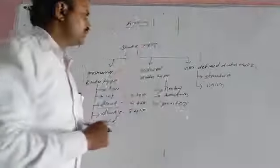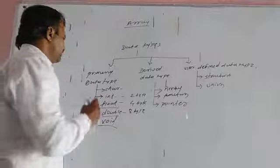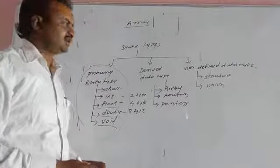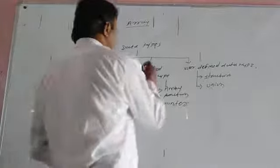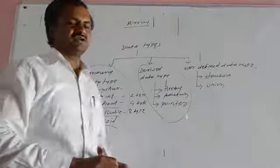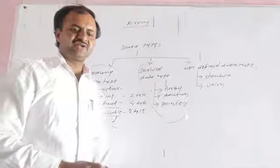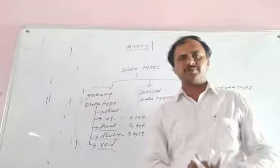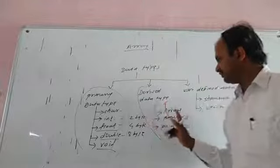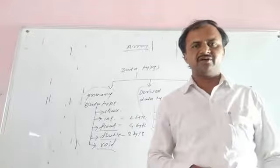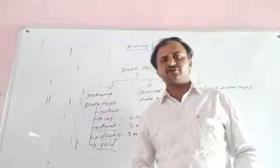So in summary there are three categories of data types. In previous lectures we discussed primary fundamental data types. Now in this lecture we discuss derived data types. Derivation means expanding the memory allocation area. In this derived category there are three types: array, function, and pointer — used to expand total memory location.